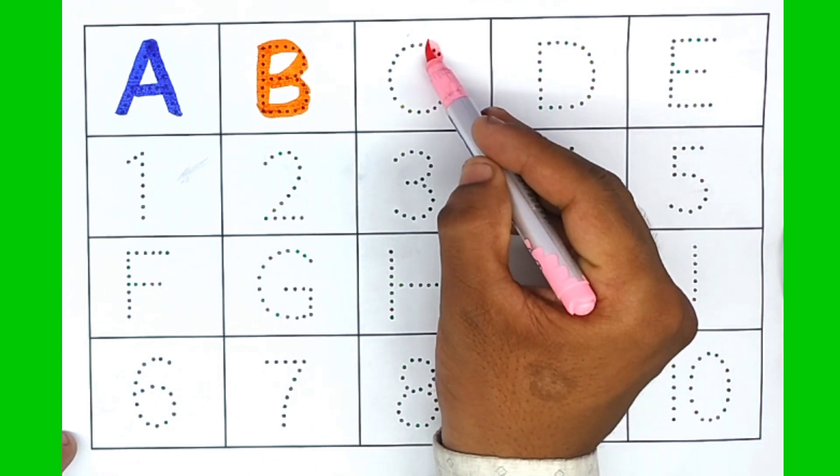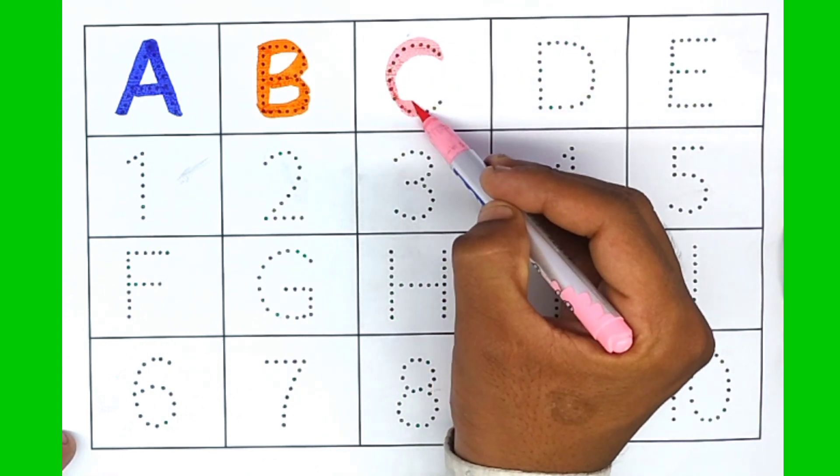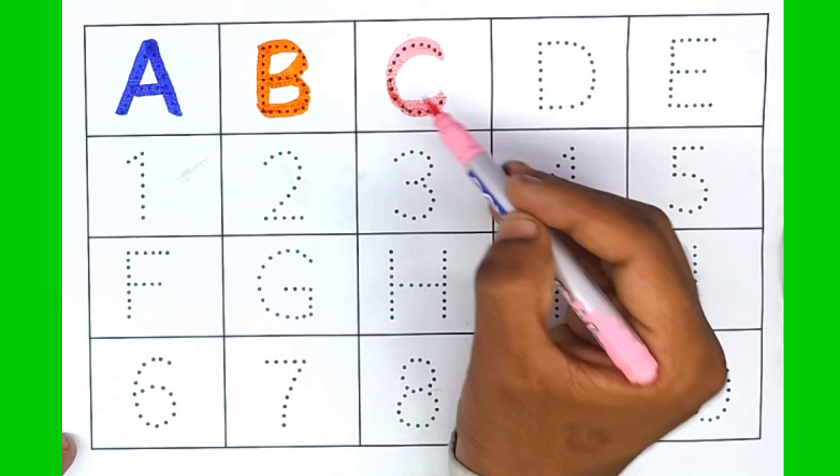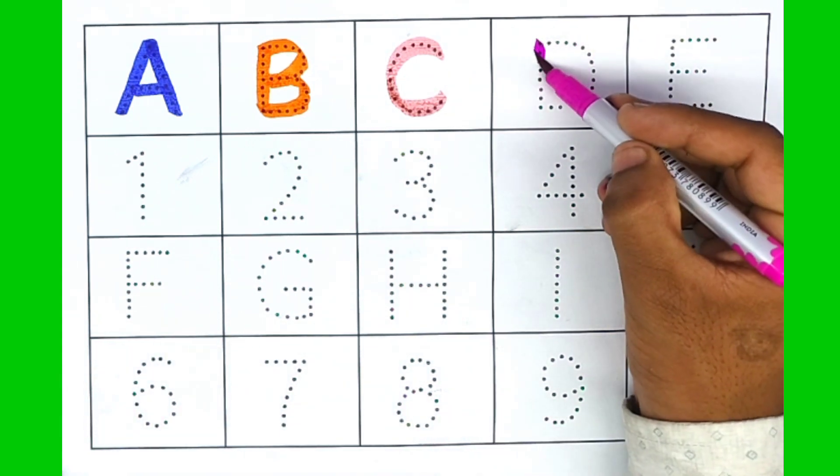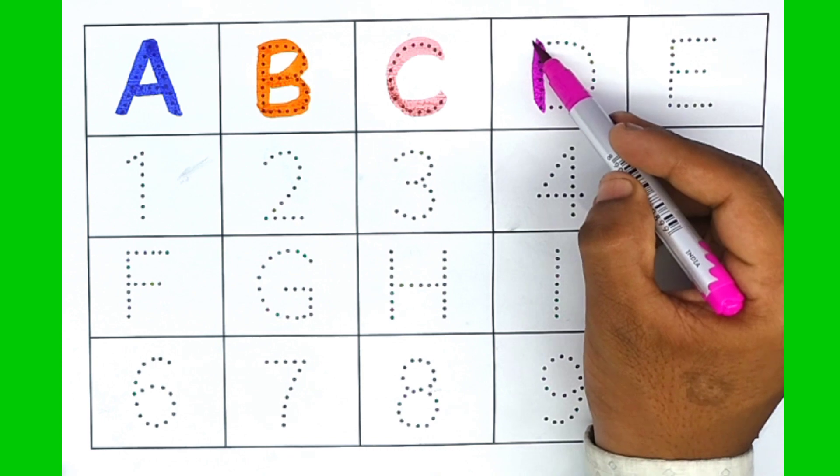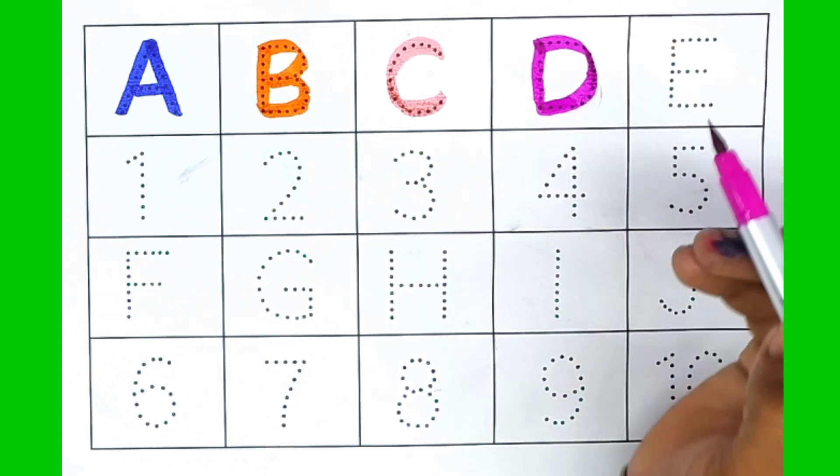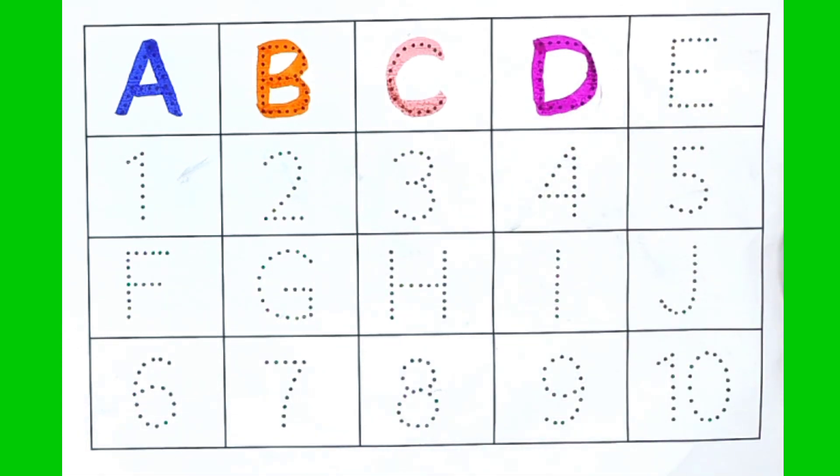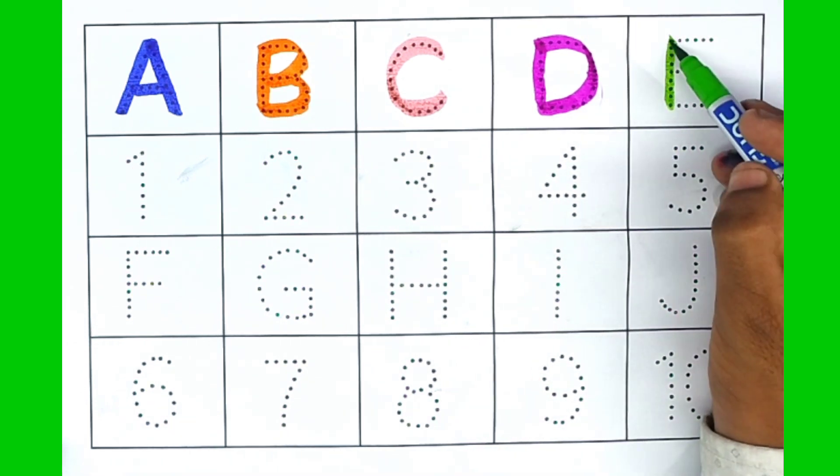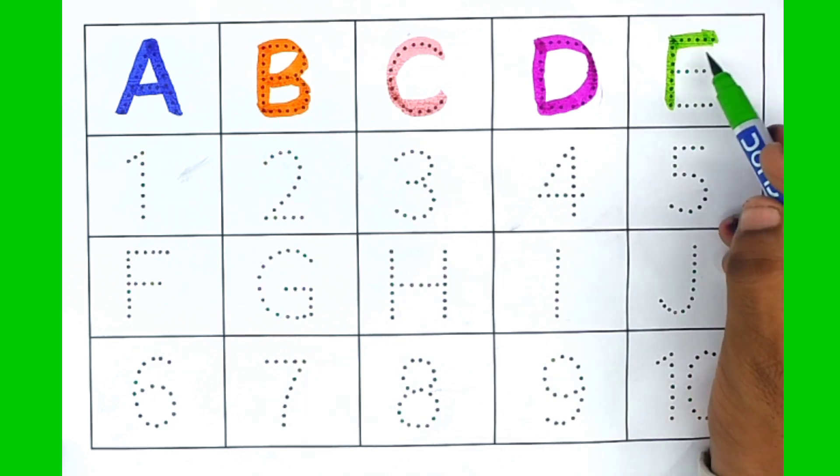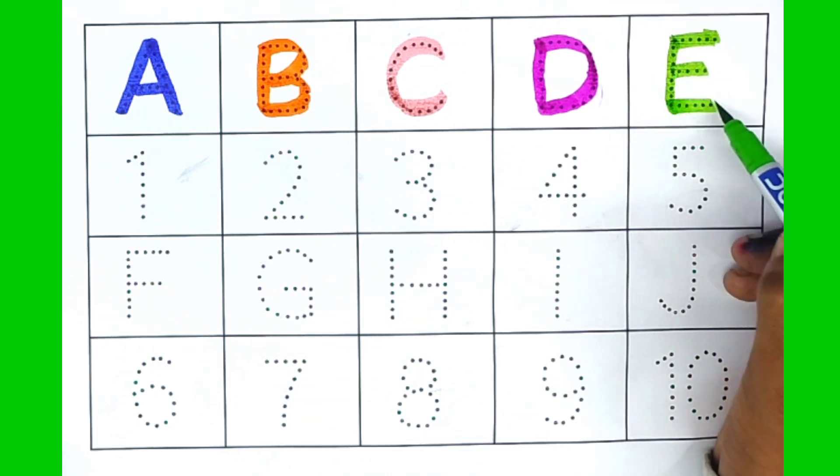Light pink color. C, C for cat. Pink color. D, D for dog. Parade color. E, E for elephant.